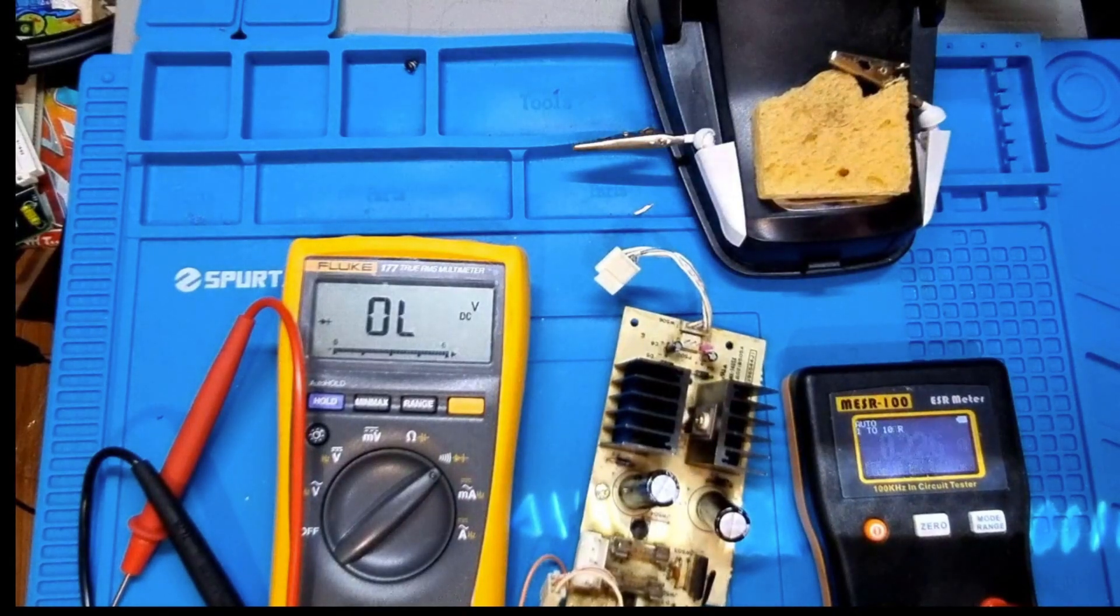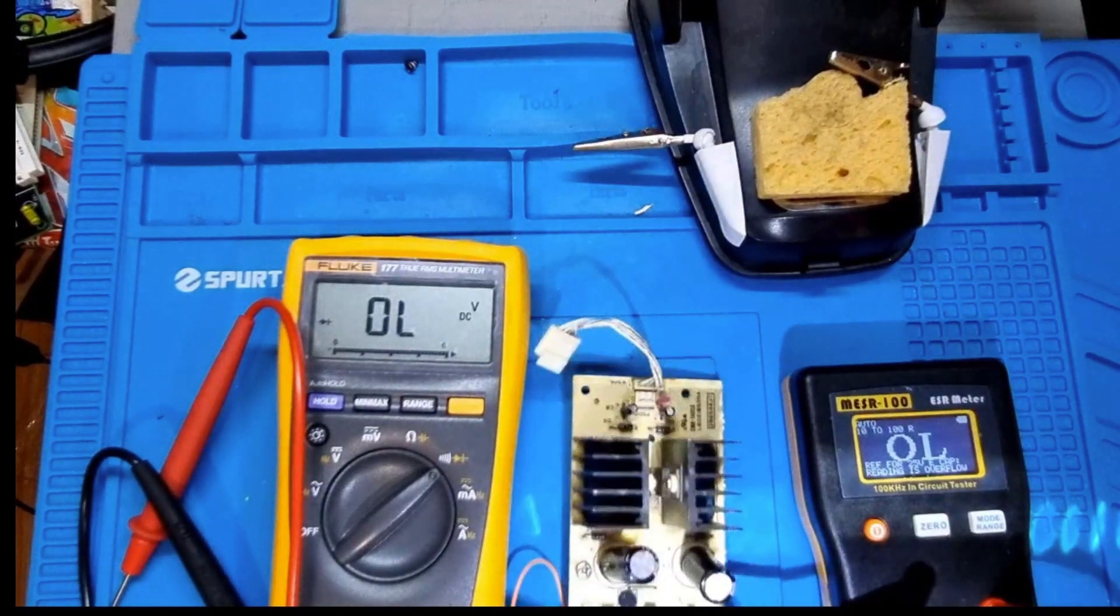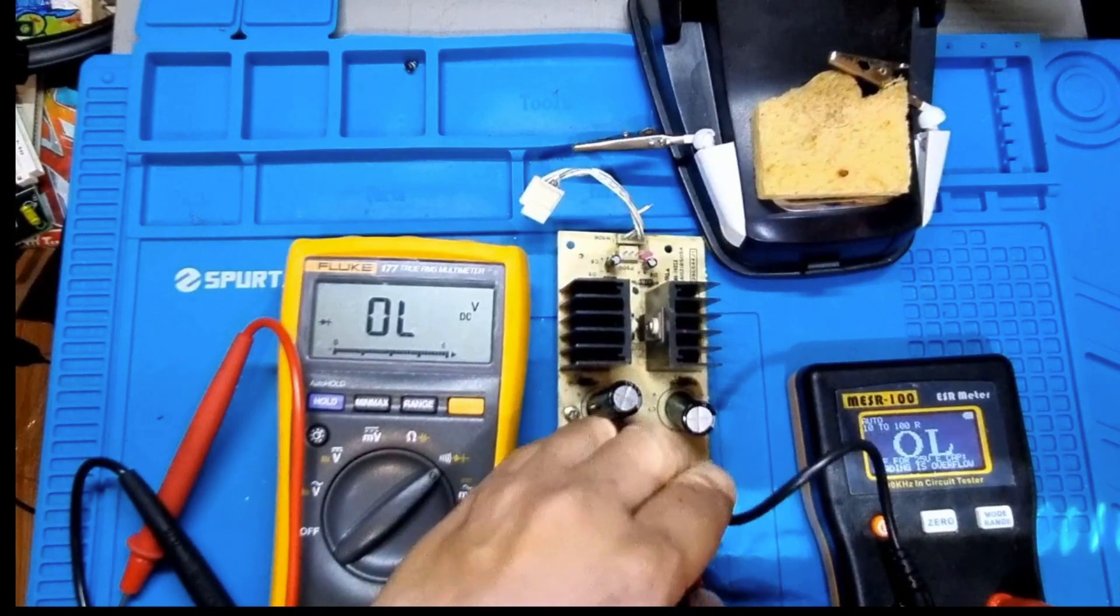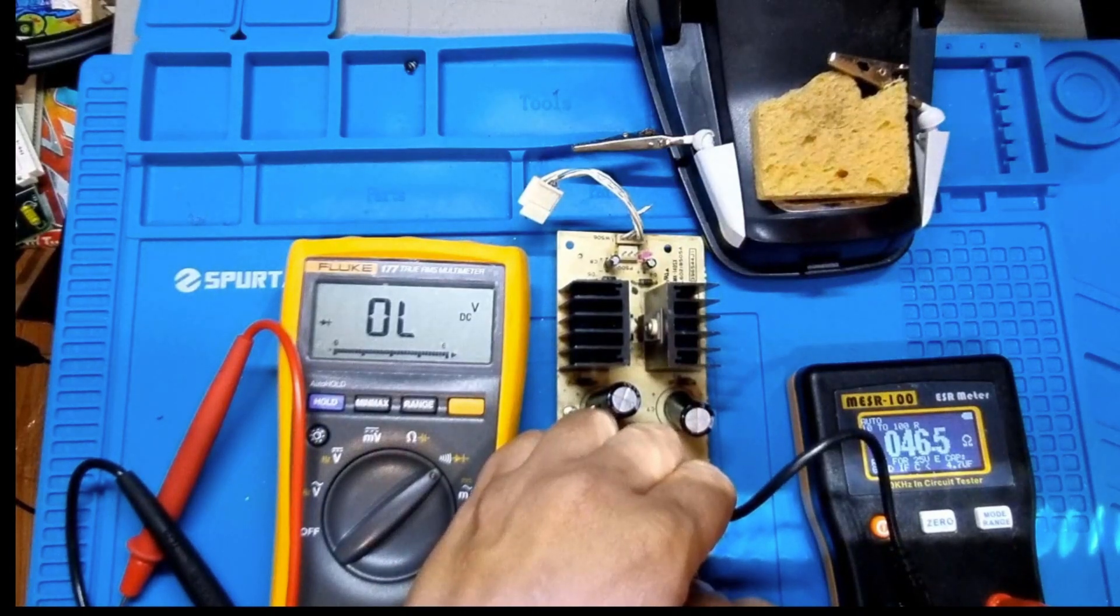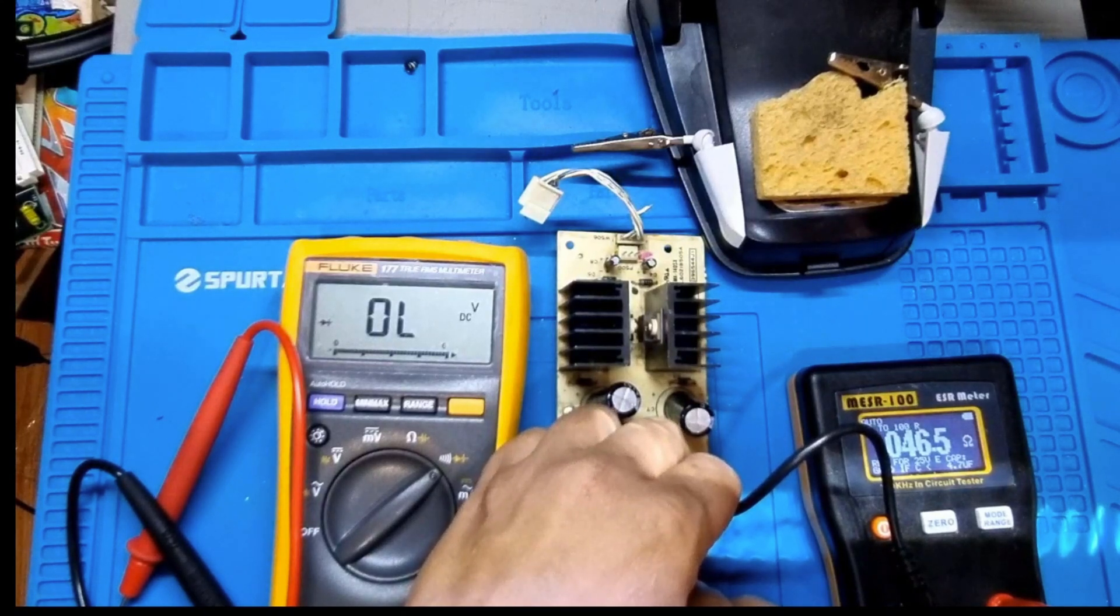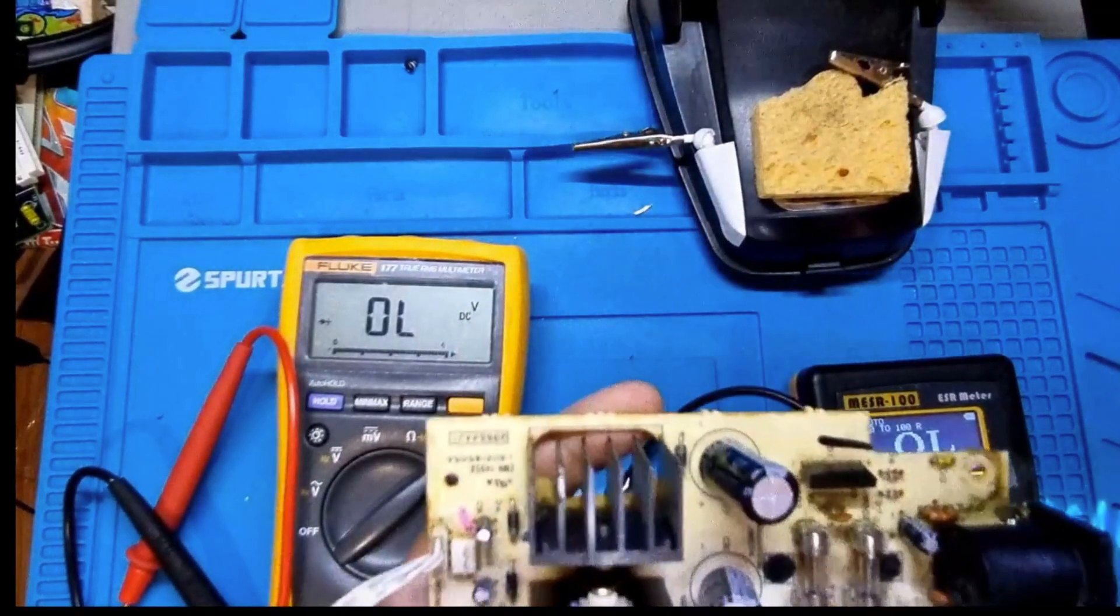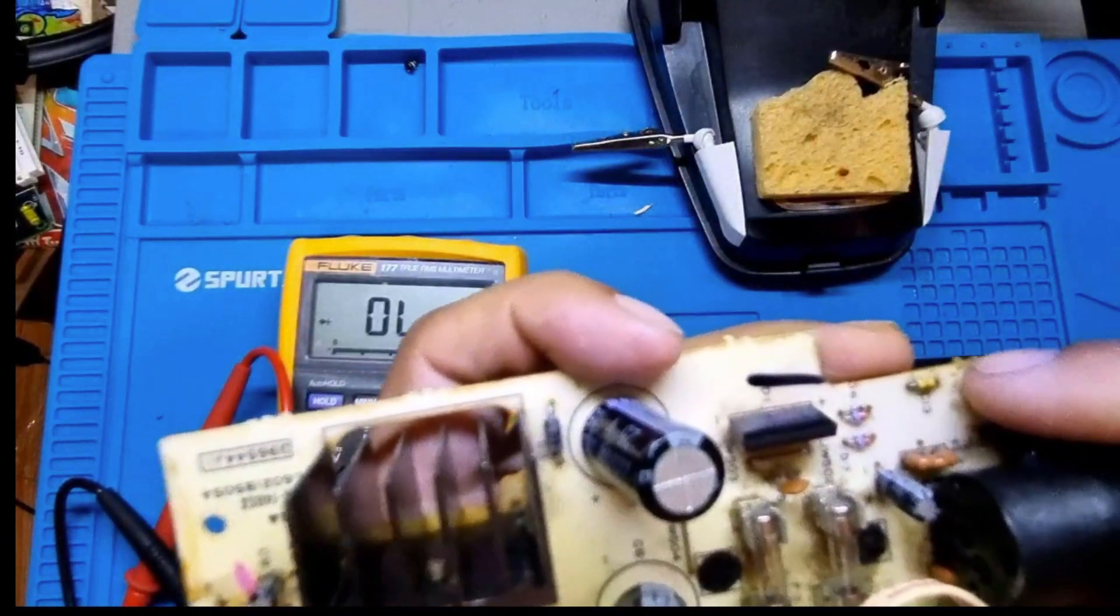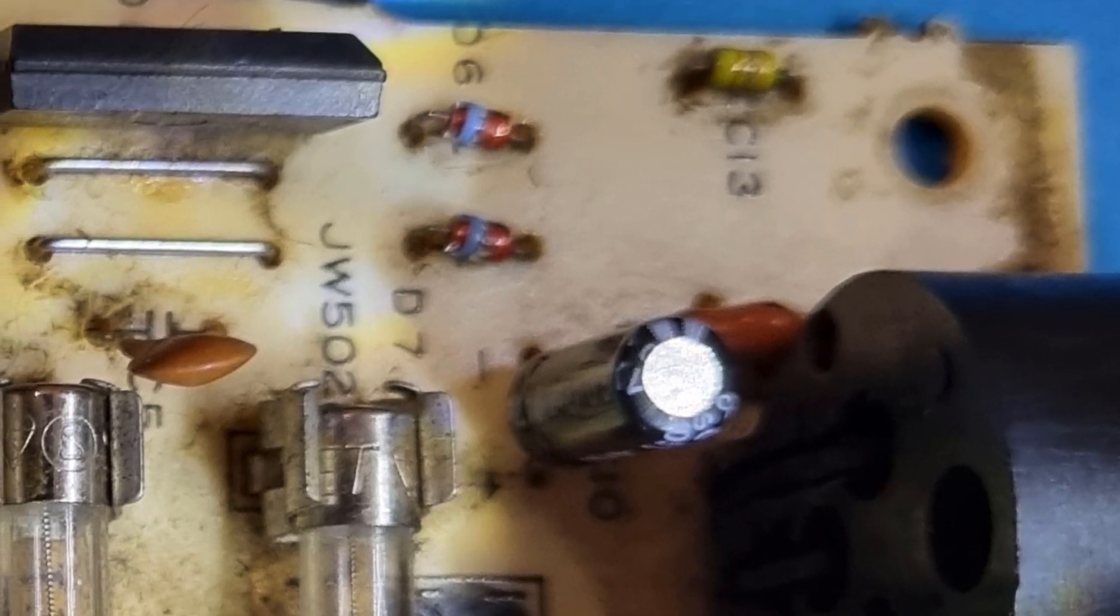Now on this C13, I'm gonna do an ESR. I don't think this cap's polarized. Look at that - 46.5 ohms and it says good if capacitor is less than 4.7 microfarads. Me personally, I think that ESR is high for this capacitor. Anyone got a link on the schematics, tell me what this C13 capacitor is. I don't think you're going to be able to see the colors of it. I'll take a picture and put it on the screen.